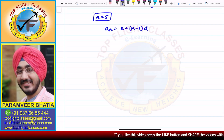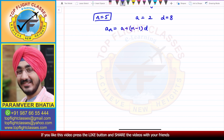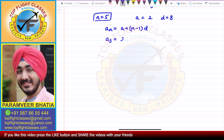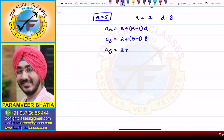We have N = 5, A = 2, and D = 8. Putting in the values: A5 = 2 + (5 minus 1) times 8. That is 2 plus 4 into 8, which gives 2 plus 32.